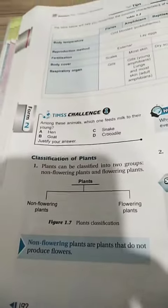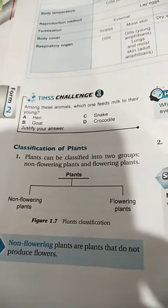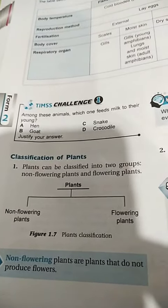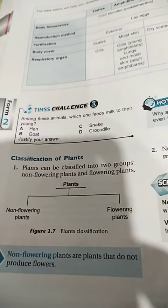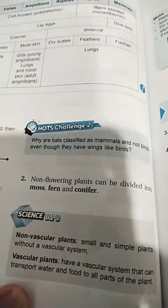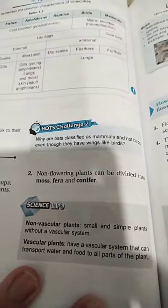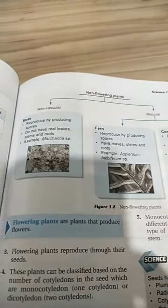Now let's talk about the classification of plants. Plants can be classified into two groups: non-flowering plants and flowering plants. Non-flowering plants can be divided into moss, fern, and conifer.